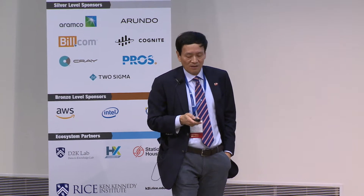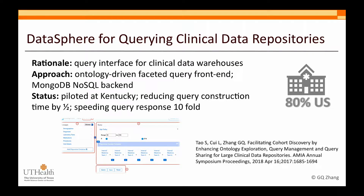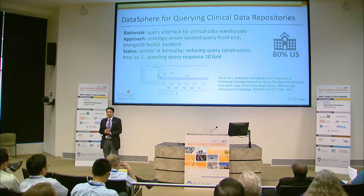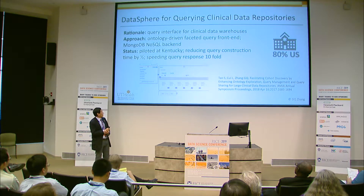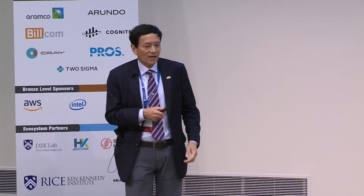More than 80% of U.S. hospitals have EMR systems. Once you collect electronic health records, you have a large footprint of patient data. An electronic data warehouse is really about reusing that patient cohort to perform different kinds of research projects. The interface becomes an important issue — how to get the subgroup of patients you want. We developed the DataSphere system to make that process easier.